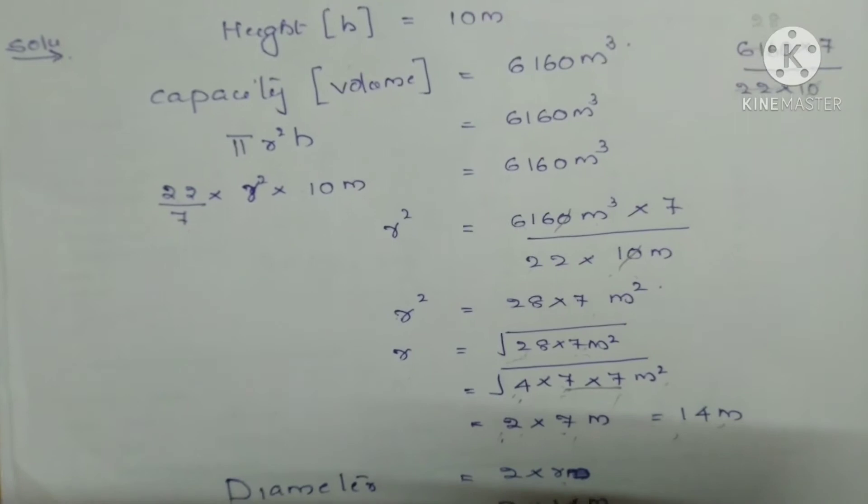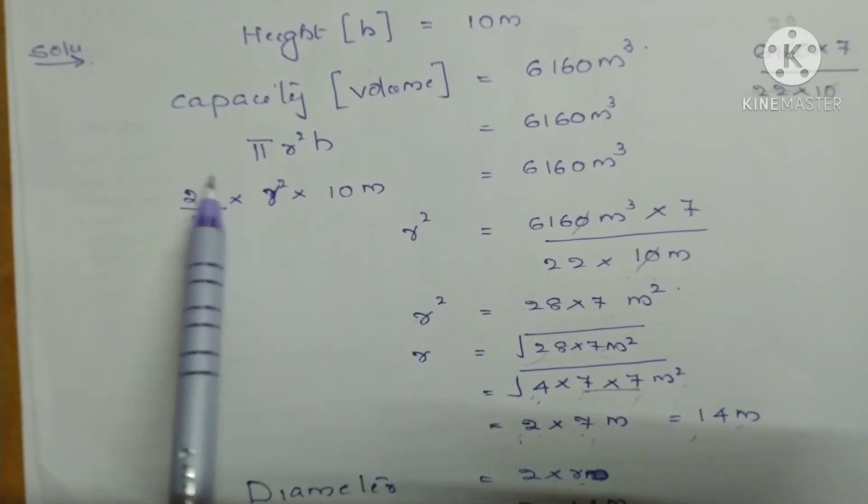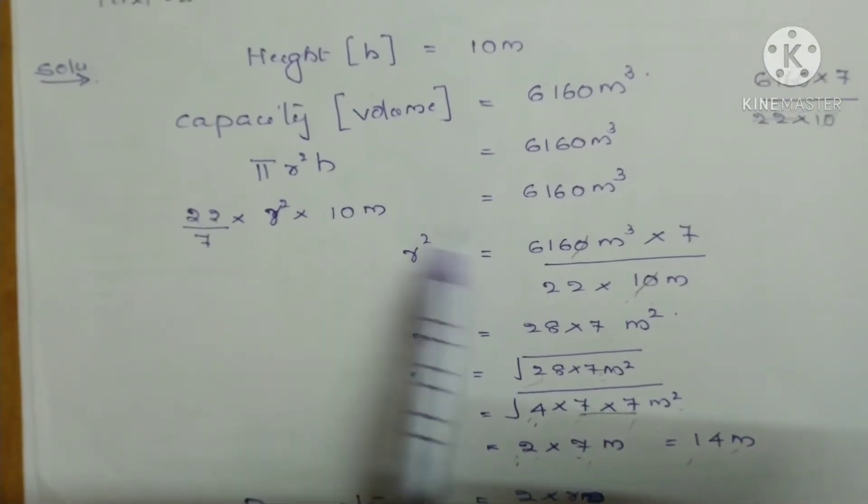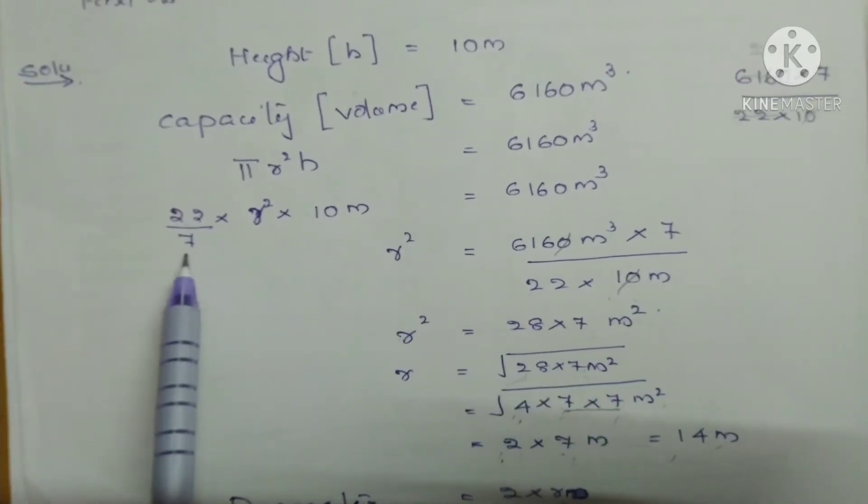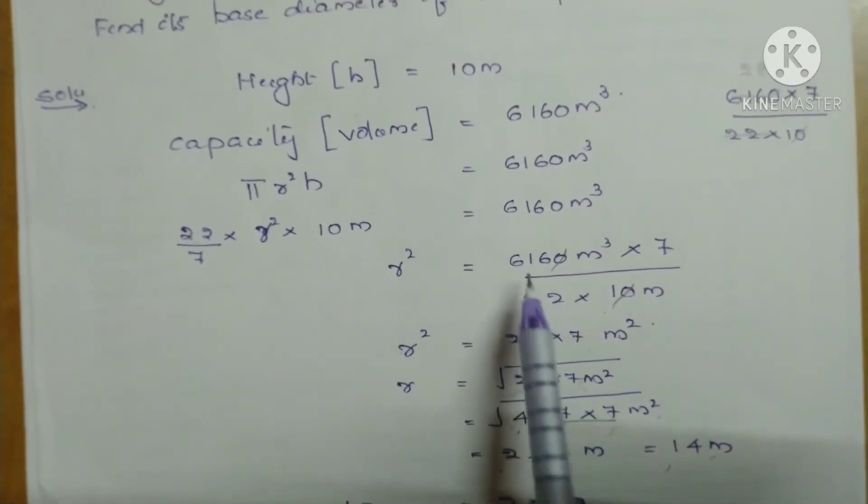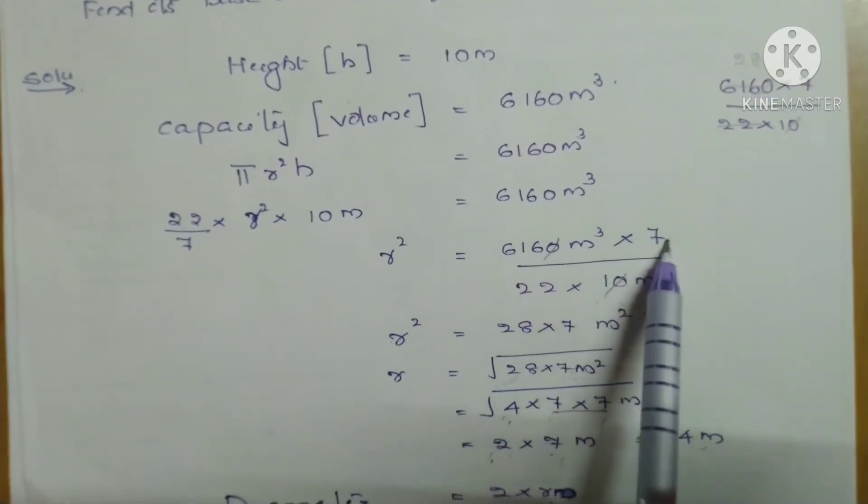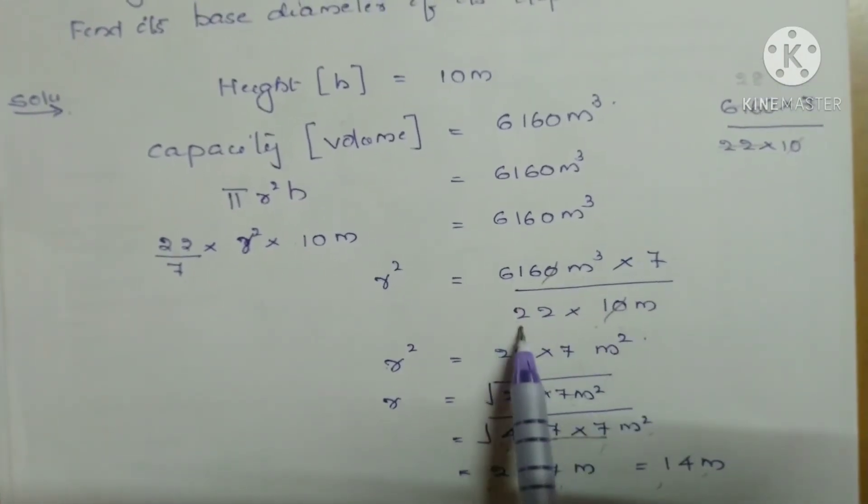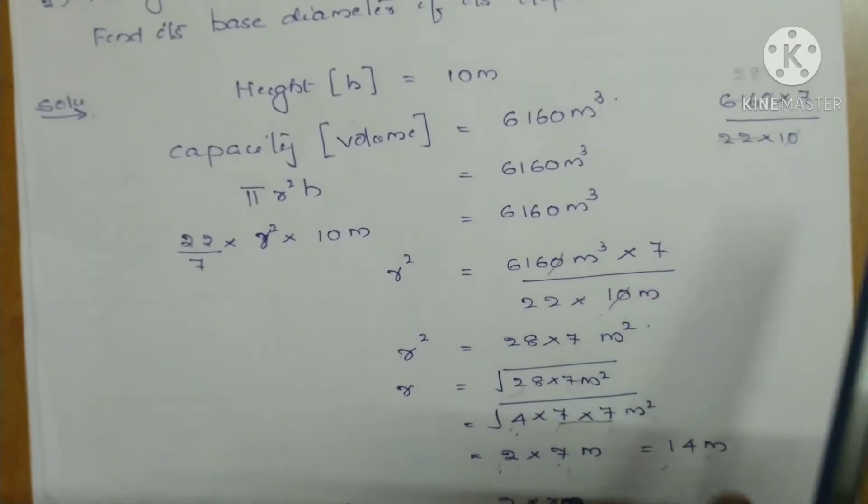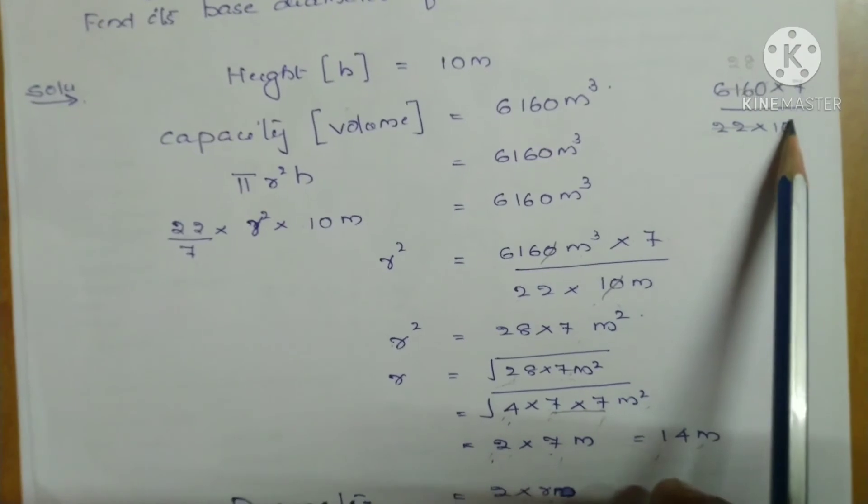Now R², that we have to find out. So R² we are keeping alone and take others that side. So these two are in numerator, so that will go in denominator. And this is in denominator, so that is coming in numerator. So R² is equal to 6160 m³ into 7 divided by 22 into 10. This we can simplify. I did its calculation: 6160 m³ into 7 divided by, so 0, 0 is going.